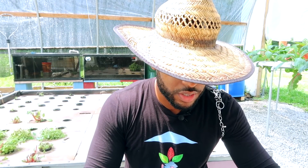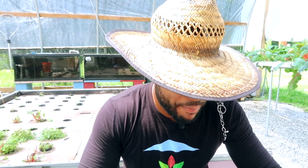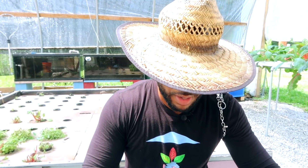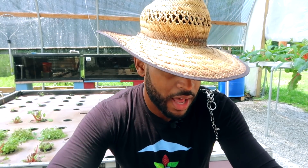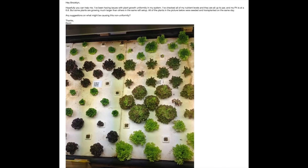This question comes from Kevin Saska. What's going on, Kevin? Kevin's question goes as follows: hey Brooklyn, hopefully you can help me. I've been having issues with plant growth uniformity in my system. I've checked all the nutrient levels and they are all up to par and my pH is at 6.8, but some plants are growing much larger than others in the same raft setup. All of the plants were seeded and transplanted on the same day. Any suggestions on what might be causing this non-uniformity?